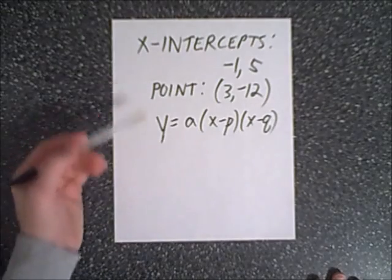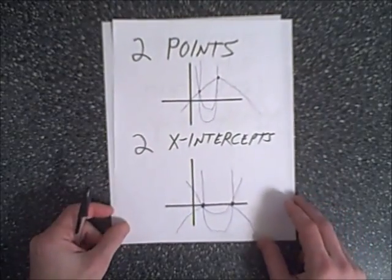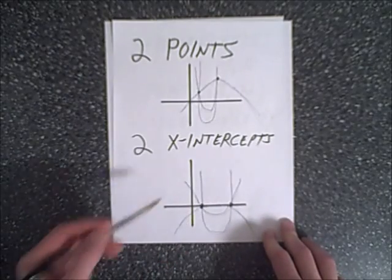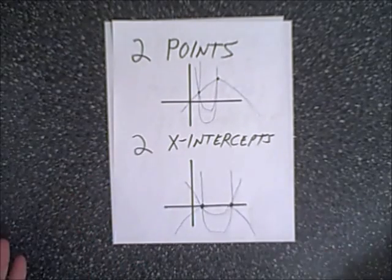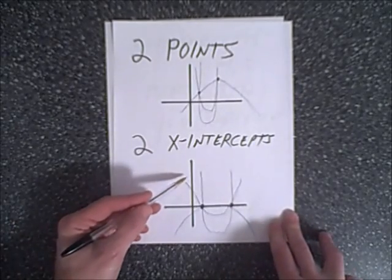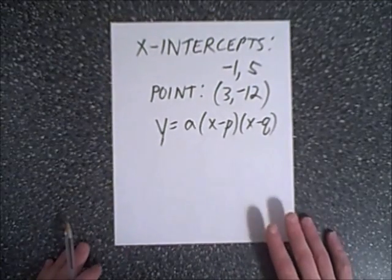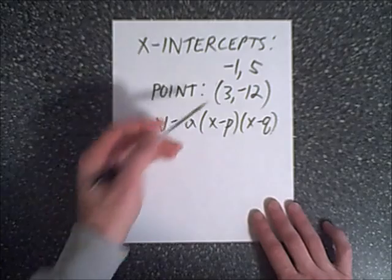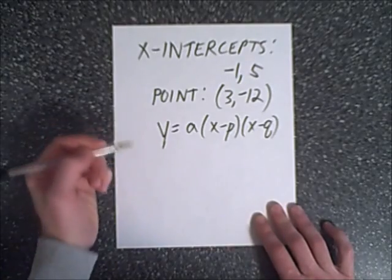In this example we're given two intercepts and a point. As mentioned earlier, two intercepts alone aren't enough information — the third point determines the shape of the parabola: how wide it will be, whether it faces up or down, what the stretch will be. The third point enables us to find the a value in intercept form. So we have our two intercepts and we substitute values.